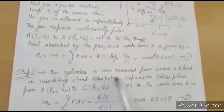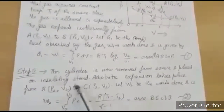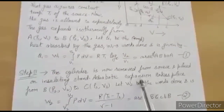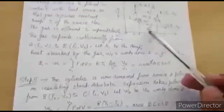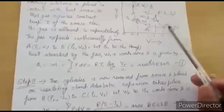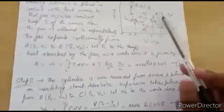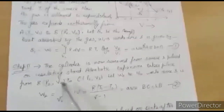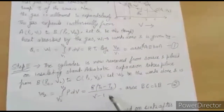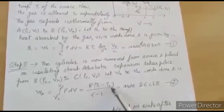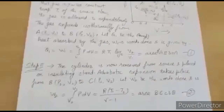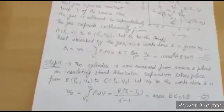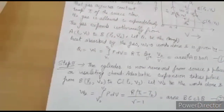In the second step, the cylinder is placed on the insulating stand — adiabatic expansion occurs from point B to C, with pressure-volume states P2V2 to P3V3. The work done for adiabatic expansion equals R(T1 − T2) / (γ − 1), where γ is the coefficient of expansion.